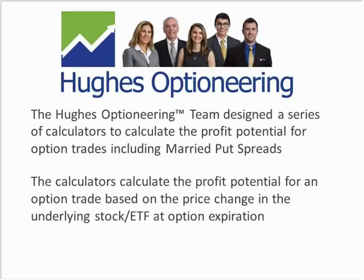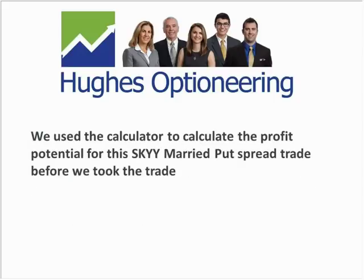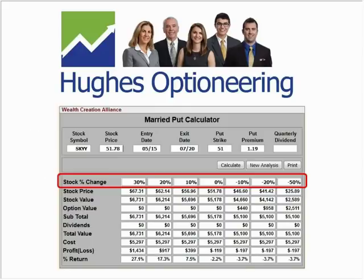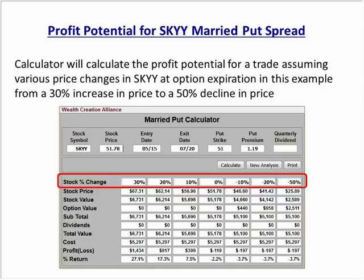We designed a series of calculators that calculate the profit potential for option trades, including married put spreads. The calculators calculate the profit potential based on the price change in the underlying stock or ETF at option expiration. We use these calculators before we take the trade, which allows us to know the profit potential in advance. For this SKYY married put, we used the calculator before entering — we bought SKYY at $51.78 and bought the 51 strike put at $1.19.